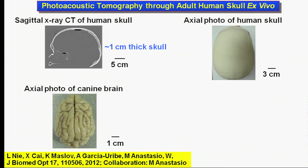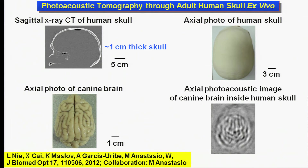Despite the difficulty of transcranial ultrasonography in adults, transcranial photoacoustic tomography has proven feasible due to its one-way ultrasonic propagation. Its promise for sub-millisecond imaging of human brain function is simply exhilarating.